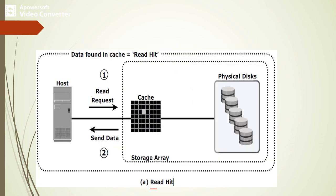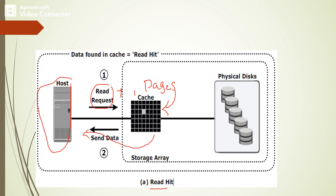In a read hit scenario, the host sends a read request and the requested pages are available within the cache. The cache transmits the data directly to the host. That is called a read hit — a successful read operation where the requested data is found in the cache.